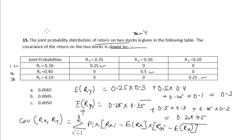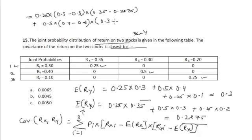So if we do the calculation, it will be equal to 0.25 times (0.3 minus 0.3) times (0.35 minus 0.2875) plus 0.5 times (0.4 minus 0.3) times (0.3 minus 0.2875) plus 0.25 times (0.1 minus 0.3) times (0.2 minus 0.2875).